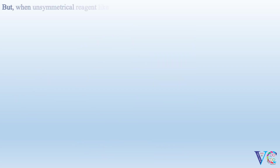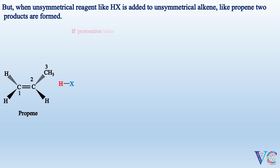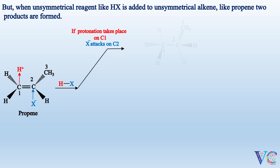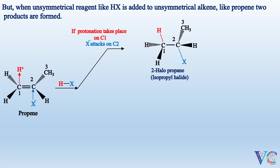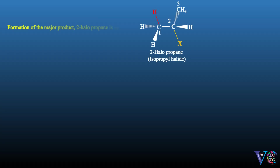But when an unsymmetrical reagent like H-X is added to an unsymmetrical alkene like propene, two products are formed. If protonation takes place on C1 and X attacks C2, 2-halopropane (isopropyl halide) is formed. Alternatively, if protonation takes place on C2 and X attacks C1, 1-halopropane (N-propyl halide) is formed. Among these two products, 2-halopropane is the major product and 1-halopropane is the minor product. The formation of the major product, 2-halopropane, is in accordance with Markovnikov's rule.